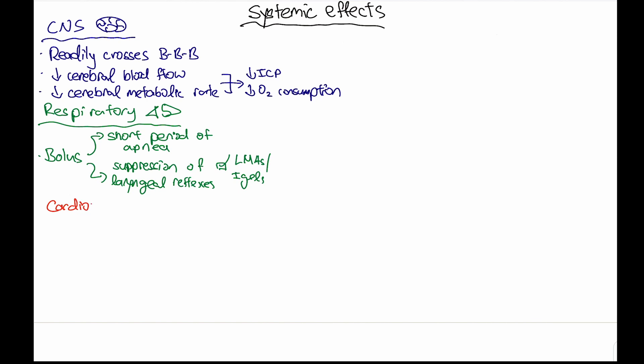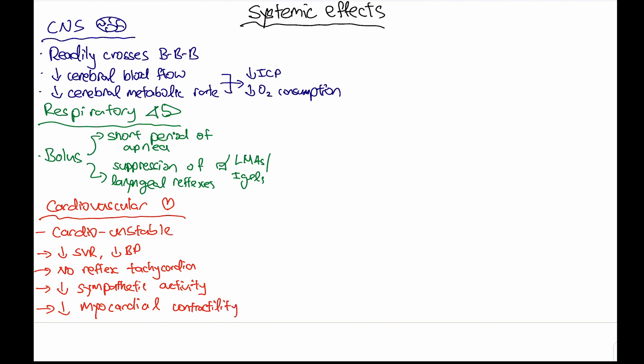It's really important to note that out of all the IV induction agents available, propofol would be the most cardiovascularly unstable. It basically causes a decrease in systemic vascular resistance and also drops the blood pressure with no evidence of reflex tachycardia. It also has a negative inotropic effect on the heart and dampens the sympathetic activity. As this is known to be a predictable response, anesthetists would normally have emergency drugs available such as metaraminol or ephedrine to help boost the blood pressure if it drops too low.